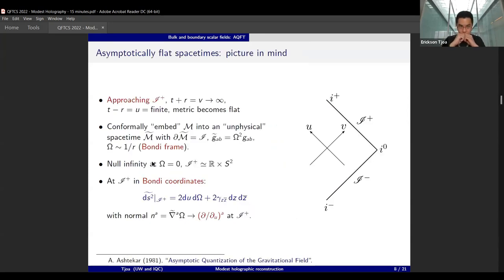Now, the picture of asymptotically flat spacetime that we want to have in mind is the one that Finn showed earlier, which is that you have this conformal boundary that is null, and you approach them to future null infinity by setting the coordinates to be infinity.